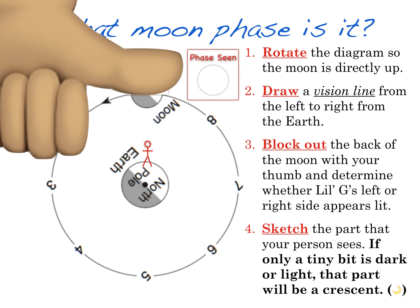All right, so I'm going to use my rule of thumb to block that part out so that I can see what little g sees. And now I'm going to draw a vision line so that it's very clear what little g's right and his left side is. And now that I know what his left and his right is, I can clearly see that most of the moon on the left is shaded and there's a tiny bit on the right that's lit.